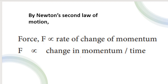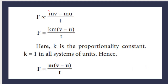According to Newton's Second Law, force is directly proportional to the rate of change of momentum. Rate of change of momentum is change in momentum divided by time. So, force F is directly proportional to (mv minus mu) divided by t. To remove the proportionality symbol, we introduce a proportionality constant k. So, F equals k times m(v minus u) divided by t.